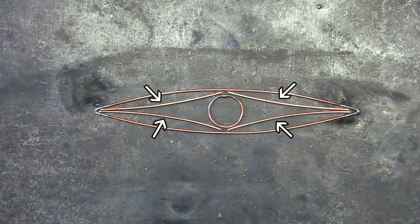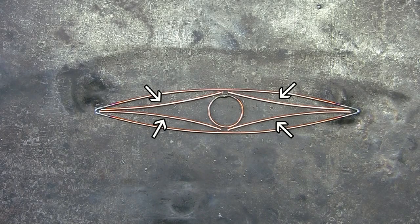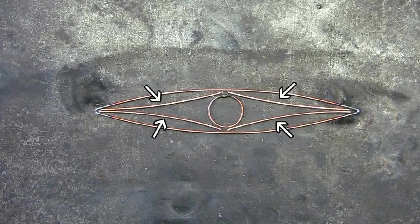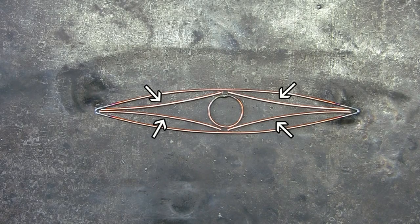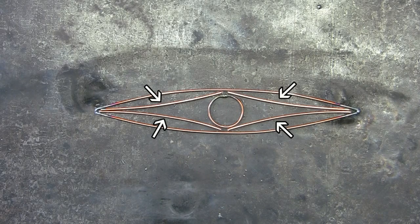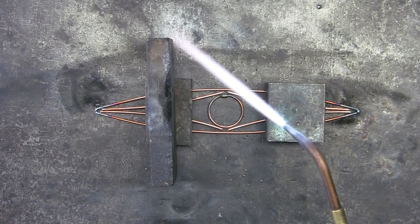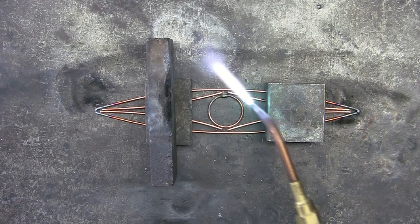Using some pieces of 3/32nd RG45, curving them with a pair of pliers, and then placing them on the deck of the kayak. And now to braise all of this together.